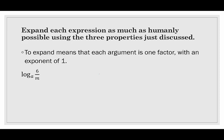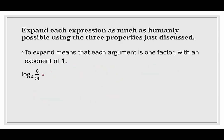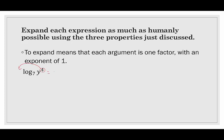In the next example, we have log base a, and the argument is 6 divided by m. So this time we're looking at the same base division property. We can rewrite it as two separate logarithms using subtraction. So, this would be log base a of 6 — the 6 has to come first because it's the dividend — minus log base a of the divisor m. And this would be the expansion of log base a of 6 over m. In the following example, we have log base 7 of y to the fourth. We only need one logarithm here, but we can take the exponent and write it as a coefficient: four times log base 7 of y.